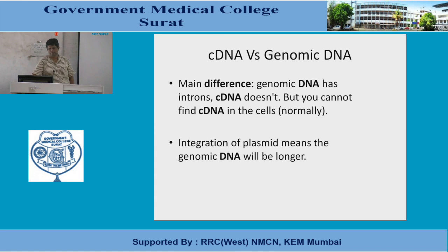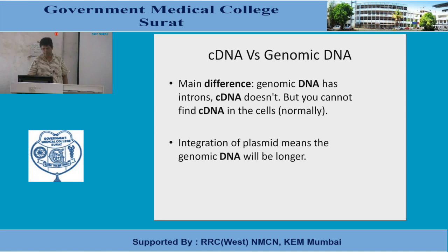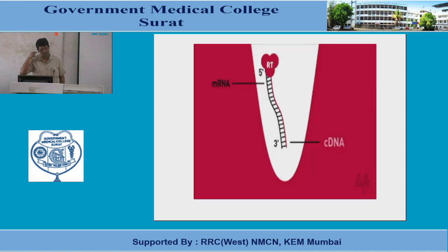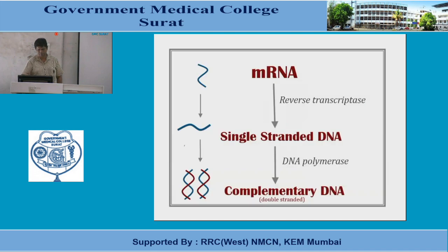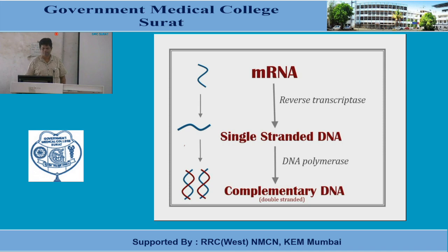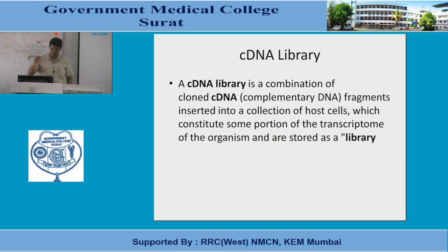cDNA is made up of only exons. Regarding length: genomic DNA is longer because it contains introns, whereas cDNA contains only exons. First, reverse transcriptase makes single-stranded DNA from mRNA, then DNA polymerase makes it double-stranded — this is complementary DNA.